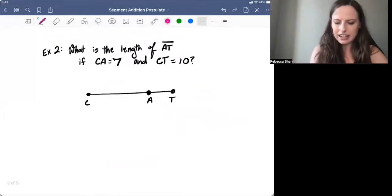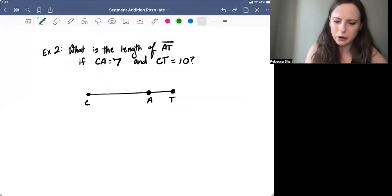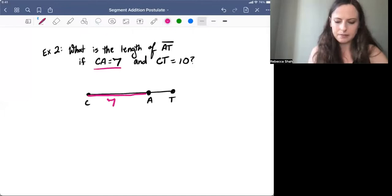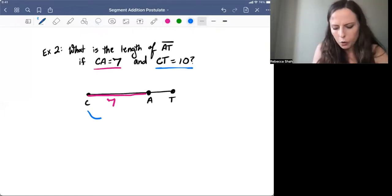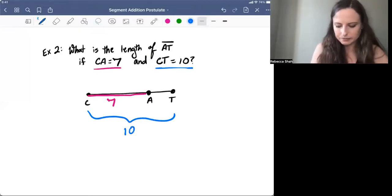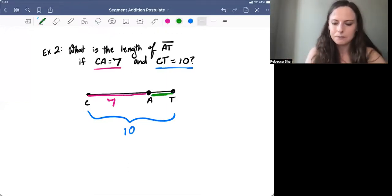So this question is asking us for the length of Segment AT. I'm going to start by labeling the diagram with what we already know. So it's telling me Segment CA, that goes from here to here, that equals seven units. And Segment CT, that's the whole thing. That's this longer segment. That's 10 units. So we're asked to find this other small segment, AT.